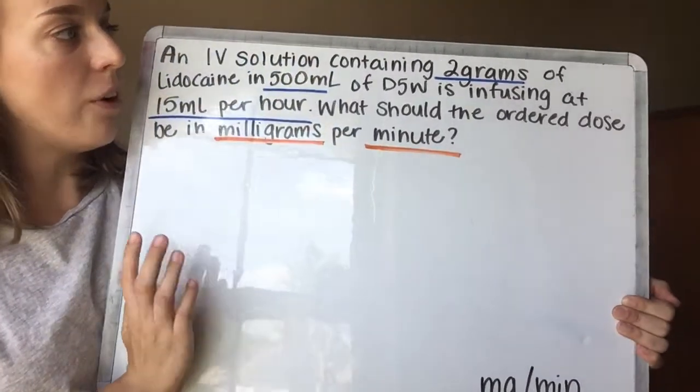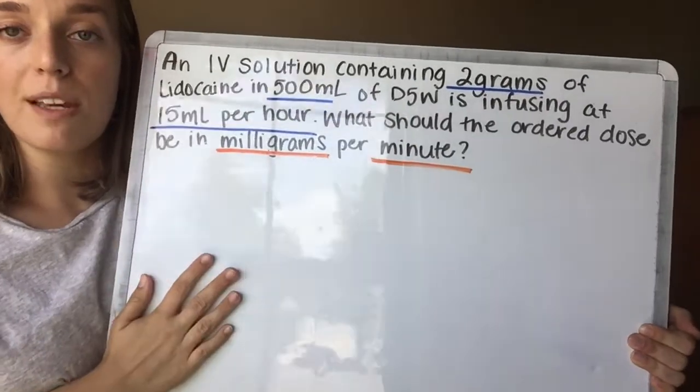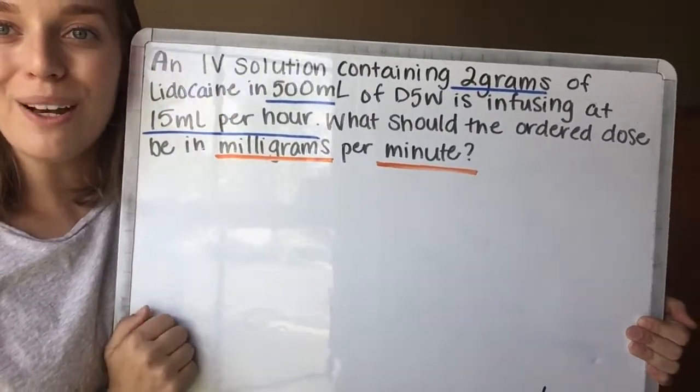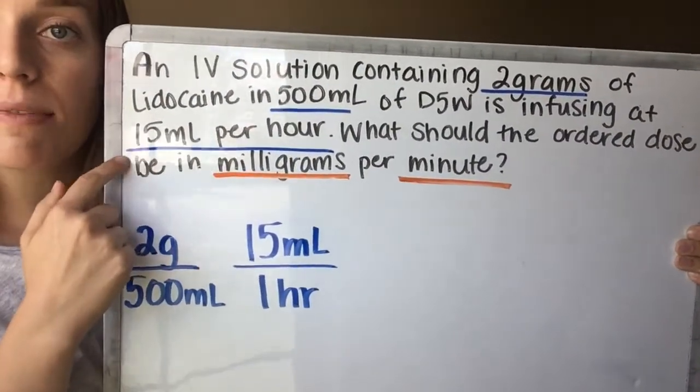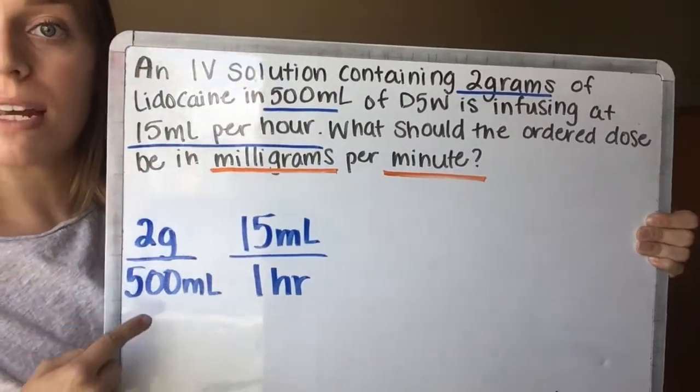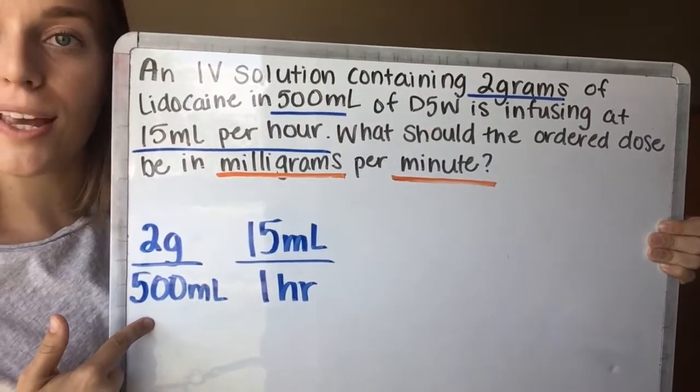Although the medication and the infusing fluid is really important, it's not important for this. We're just looking for those numbers. So we'll set it up one by one and we'll get going. So the very first things that I write down is the exact same things I'm given in the problem. So I'm given that there's 2 grams in 500 milliliters. I write it down one right over the other, just like we know how to do in all of our problems.